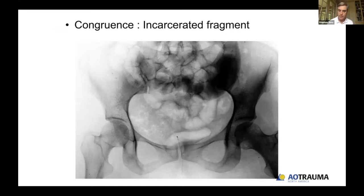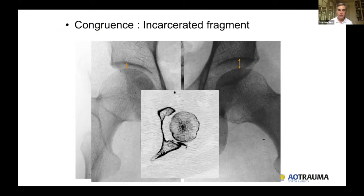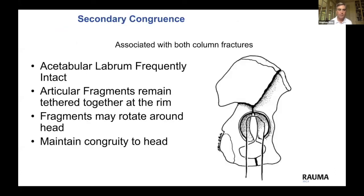Incarcerated fragments can give you a non-congruent joint. You can see how widely the joint space is opened even though the fragment on CT is quite small — it only takes a very small fragment to cause a problem and make this look very bad.